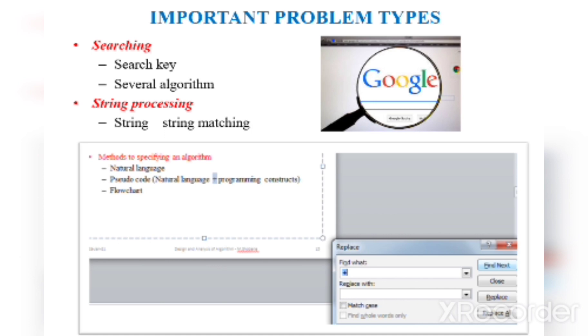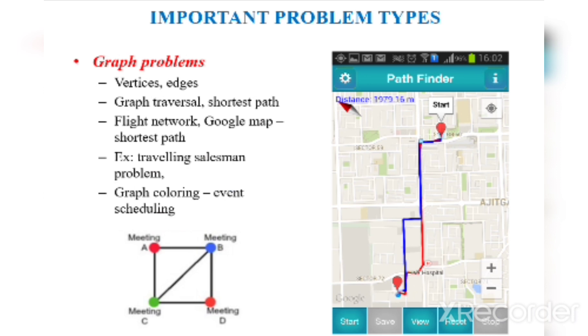The fourth one is graph problems. Graph problems are nothing but the problems that involve vertices and edges. Here we'll be having graph traversal and shortest path. For example, flight network in a Google map gives the shortest path. The next example is traveling salesman problem. The next example is graph coloring or event scheduling. One of the real-time examples of a graph problem is Google map.